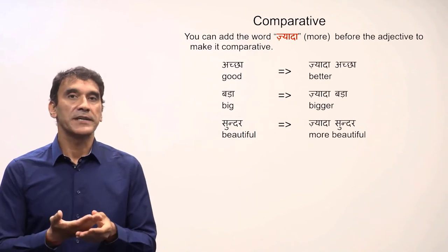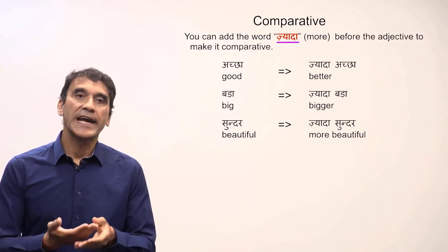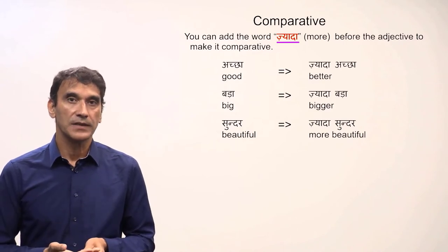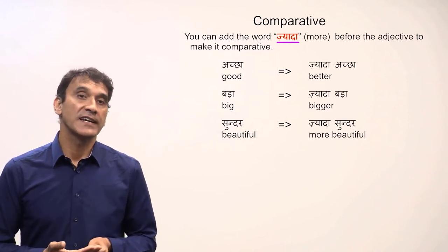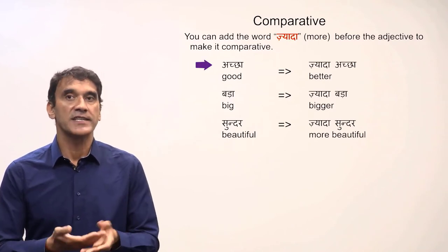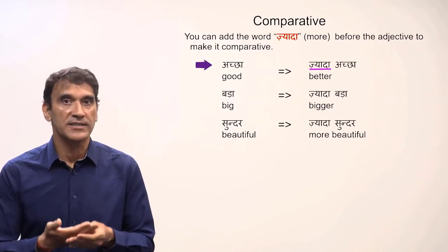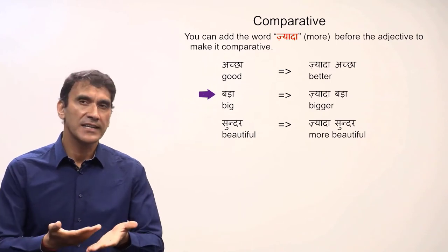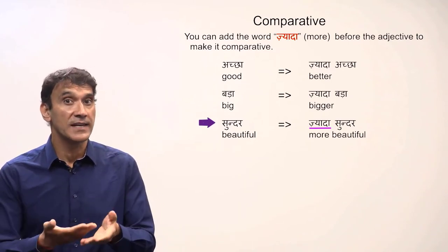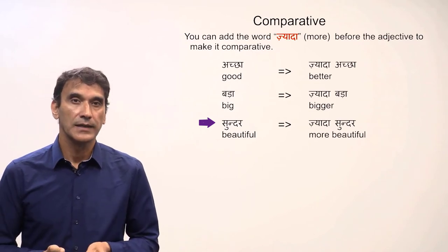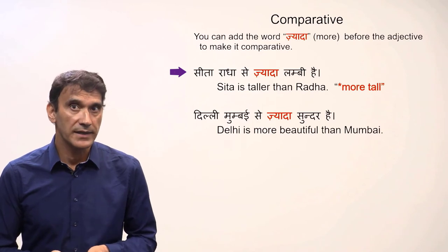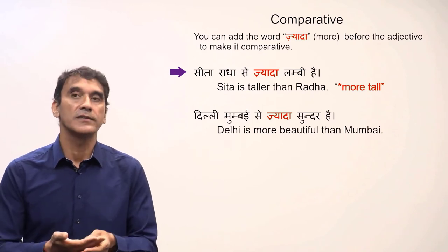There's another way of expressing the comparative form in Hindi: you can add the word 'zyada', which means 'more', before the adjective. The two words together express the comparative adjective. For example: 'achha' is 'good' and 'zyada achha' is 'better'; 'bada' is 'big' and 'zyada bada' is 'bigger'; 'sundar' is 'beautiful' and 'zyada sundar' is 'more beautiful'. Example sentence: 'Sita Radha se zyada lambi hai' — Sita is taller than Radha.